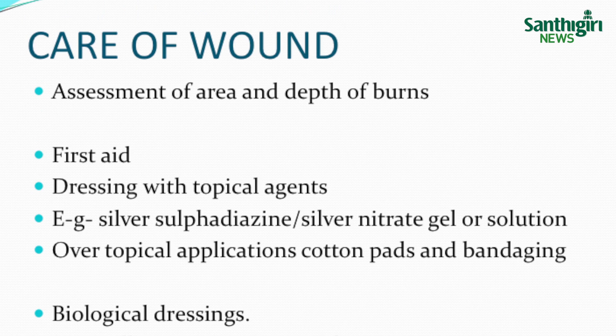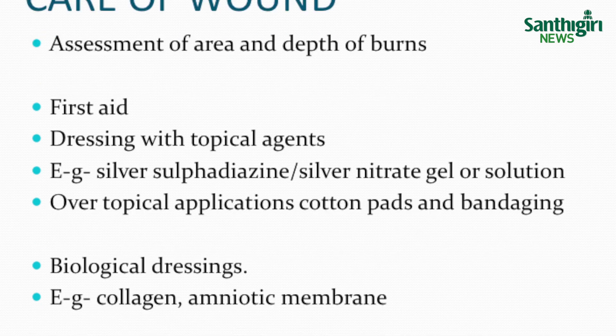Care of the burn wound: an ideal topical agent must be bactericidal, with broad spectrum coverage, non-toxic, easy to apply, should penetrate deep to the eschar, and should not cause any metabolic disturbance. No such ideal agent is available so far. Commonly used agents are silver sulfadiazine, silver nitrate gel or solution, fusidic acid, etc. Over the topical agent, cotton pads and bandaging are applied. Biological dressings give temporary covering for the wound, alleviating pain and protecting from infection. Examples of biological dressings are collagen and amniotic membrane.